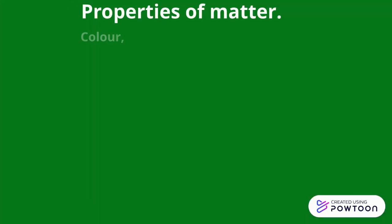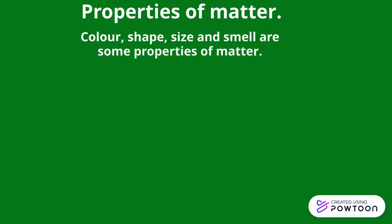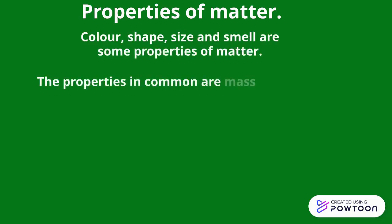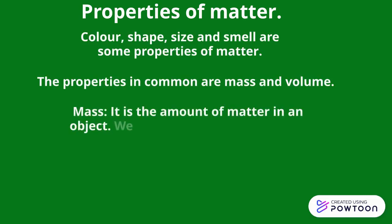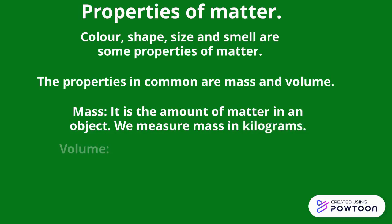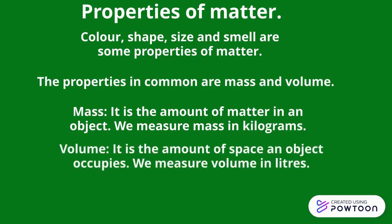Properties of matter. Color, shape, size, and smell are some properties of matter. The properties in common are mass and volume. Mass is the amount of matter in an object — we measure mass in kilograms. Volume is the amount of space an object occupies — we measure volume in liters.